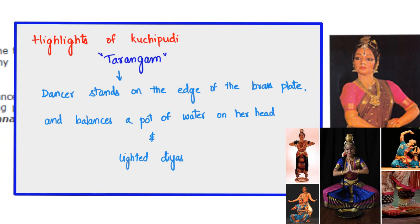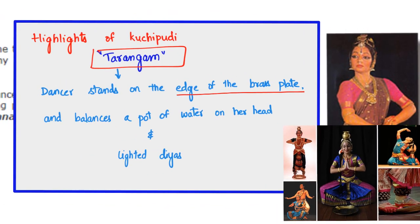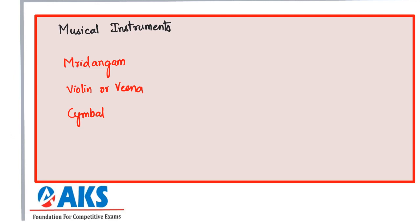The highlight of Kuchipudi is the sixth and final piece — Tarangam. In Tarangam, the dancer stands on the edge of a brass plate, balances a pot of water on her head along with lighted diyas, and performs intricate movements. The musical instruments used in Kuchipudi, following Carnatic music, include Mridangam, violin or veena, and cymbals.